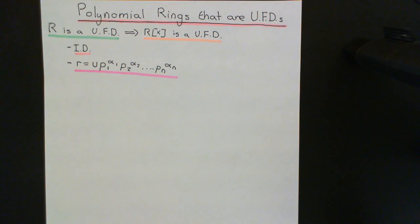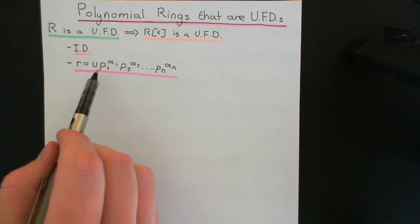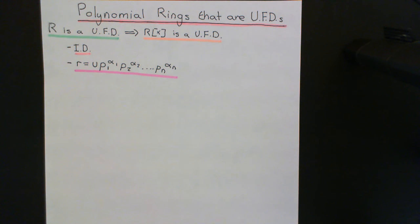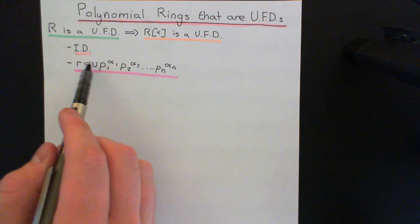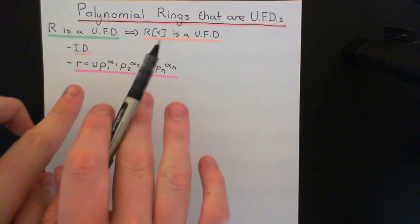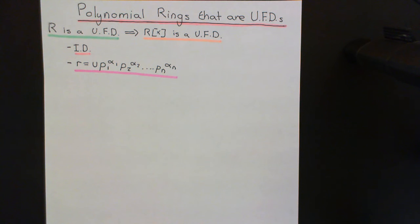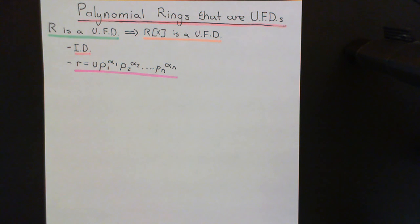In a unique factorization domain, it must be the case that all elements can be factorized this way — a unit out the front with a string of irreducibles. If the element is a unit itself, then it will be a fairly trivial factorization. This factorization must be unique up to the fact that you can tinker around with which associates of the irreducibles you're using and tinker around with the unit out the front. If you have two different factorizations into irreducibles, you can change one into the other just by tinkering with associates and the front unit.